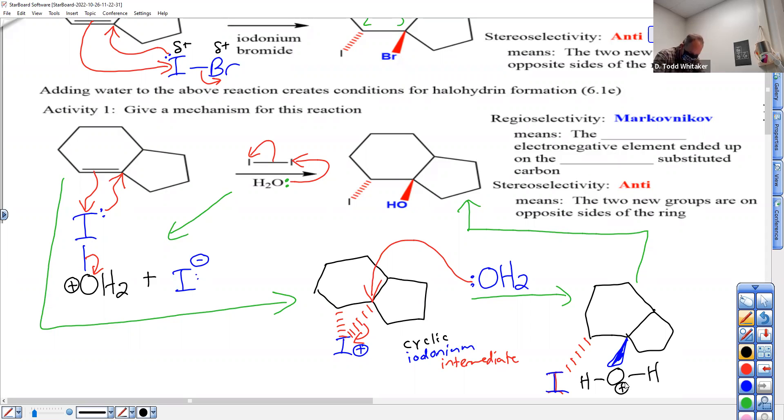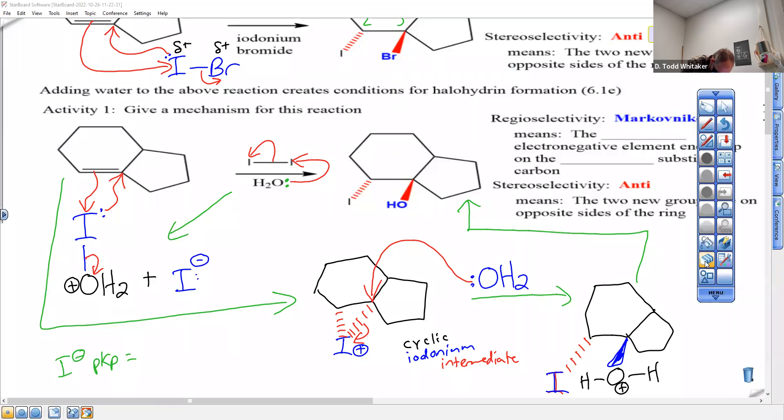And here's the question of the day: what base would be the most appropriate base to use to remove that H? Your two choices are water or iodide. Iodide has a pKb of 19. I minus pKb is 14 minus negative 5. Oh boy, yeah, I just did a total mind game on my Arabic students there. pKb: 14 minus negative 5 is 19.